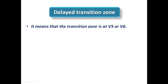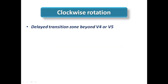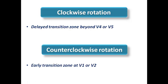From this we can create two more terminologies: delayed transition zone, meaning the transition zone is at V5 or V6 indicating poor R-wave progression; and early transition zone, where the transition zone may be at V1 or V2. These correspond to clockwise rotation (delayed transition zone beyond V4 or V5) and counterclockwise rotation (early transition zone at V1 or V2).